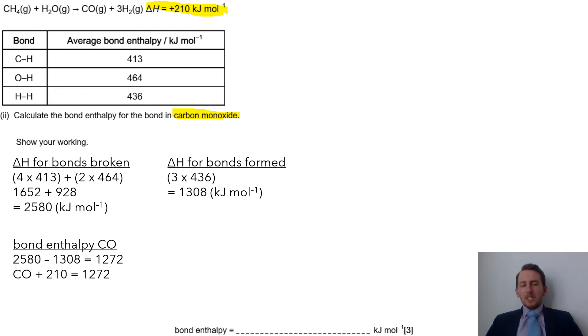So, what this is telling us is that if we have our value, our enthalpy value for carbon monoxide, so just a C to an O, if we then add on 210, we should then get to that final value. So, very simply, to then make the CO the subject, take the 210 to either side to minus it off, and we get 1,062 kilojoules per mole.